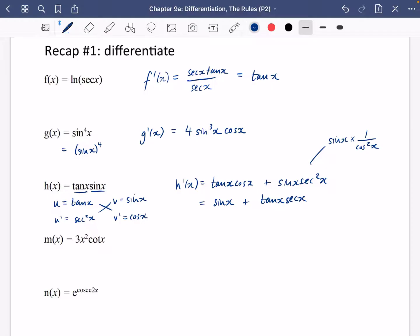Now in this one that we've got here it's also going to be a product rule, so you have that u is 3x squared which means that u dash is 6x, and we have that v is cot x, and we know that cot x goes to minus cosec squared x. It's like tan going to sec squared but it goes to minus cosec squared x.